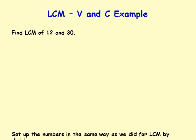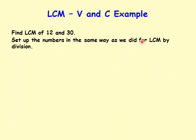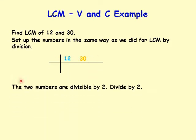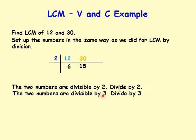The example is LCM of 12 and 30. Set up the numbers the same way as we did for LCM by division. The two numbers are divisible by 2, so we divide by 2 to get 6 and 15. Now we divide by 3. Six divided by 3 is 2, and 15 divided by 3 is 5.